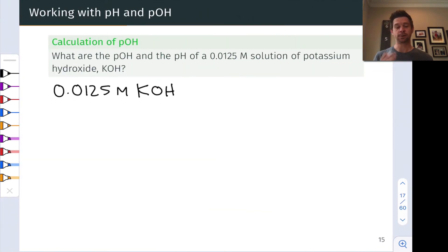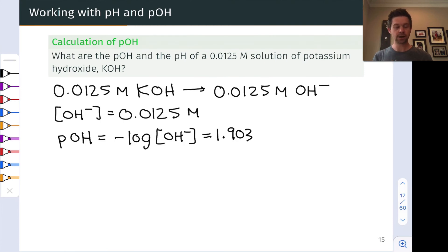In this problem, we're asked about pOH and pH of a solution of potassium hydroxide in water at a concentration of 0.0125 moles per liter. The first thing to realize here is that as an ionic compound, strong electrolyte, KOH is going to dissociate fully in water into K+ and OH-. This means that the solution that we're thinking about here has a hydroxide concentration of 0.0125 moles per liter. KOH fully dissociates. We get one hydroxide ion for every one KOH formula unit that dissociates. I think the easiest way to start here is to calculate the pOH first, since pOH is the negative base 10 logarithm of the hydroxide concentration. And we've already calculated that, and this comes out to 1.903.